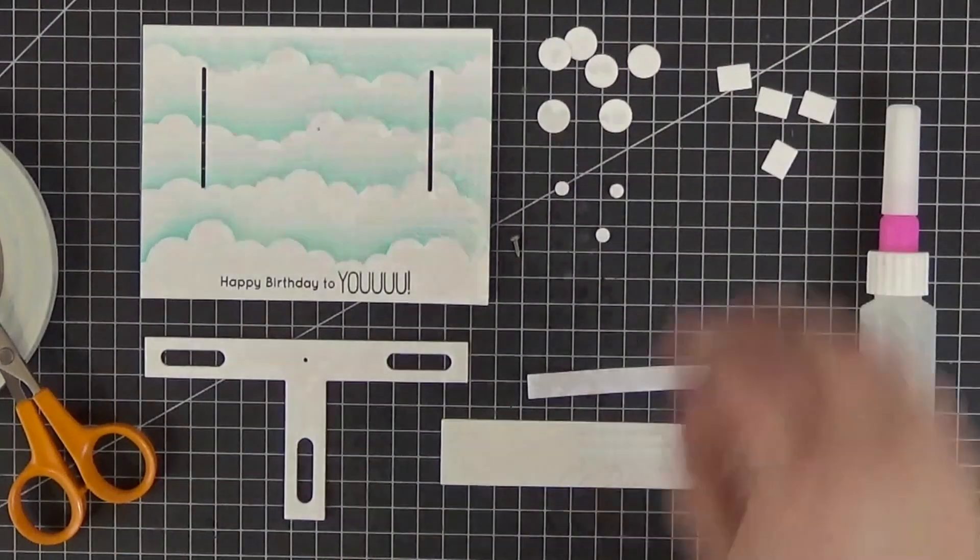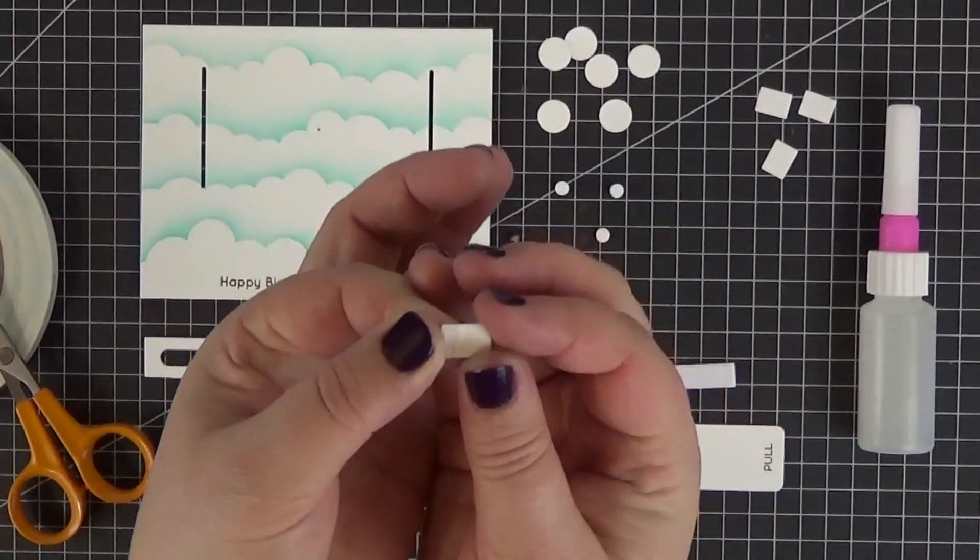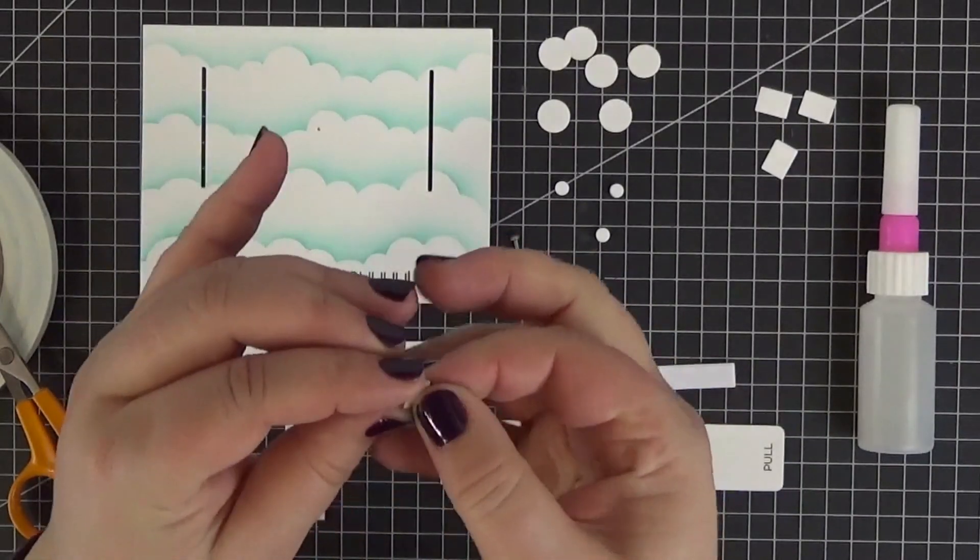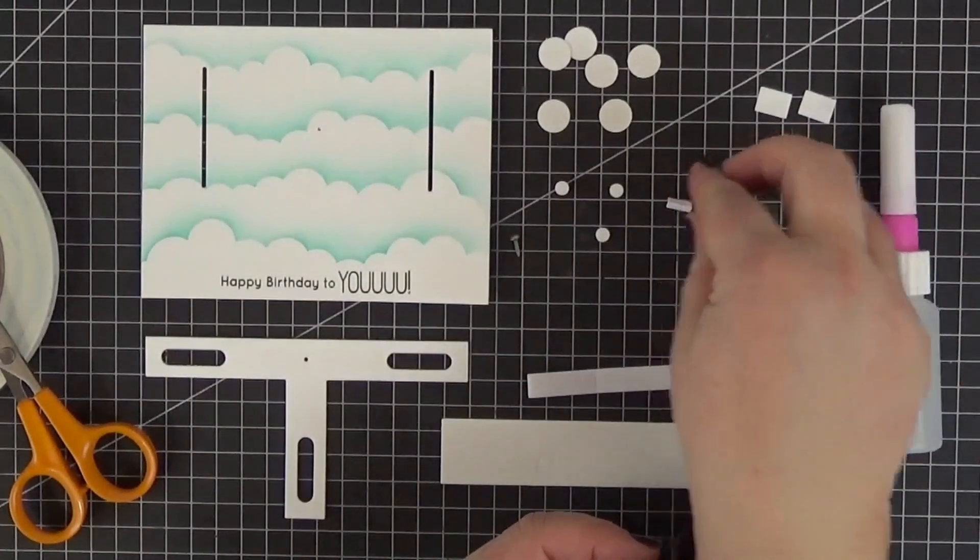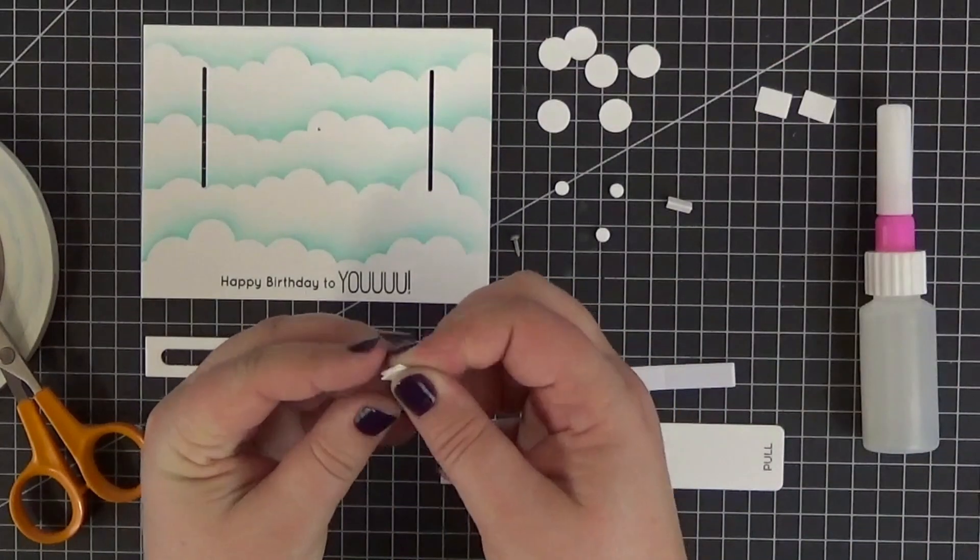We also need to fold those four little rectangles in half so that we can assemble the mechanism. It's really easy to do since they have that embossed line exactly in the middle.